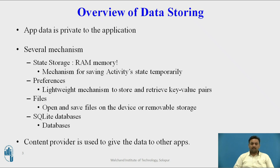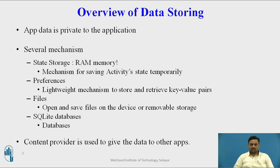Files is the third access mechanism regarding data storage. The fourth one is the SQLite database. Data is stored in the format of a database with several tables, and mostly structured type of data is stored there. These are the main mechanisms regarding storage, which we will see in detail in the next slides.